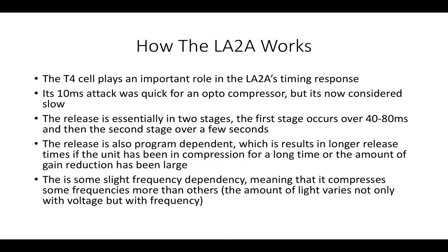Going back to that T4 cell, that's the important part, arguably one of the most important parts in the compressor. It plays an important role in its time response. 10 millisecond attack - some of the original manuals were incorrect. They had a 10 microsecond attack, which was actually incorrect. They've updated that in the newer manuals, but it is a 10 millisecond attack, which is fast, really. But now it's considered slow because compressors are much faster acting, such as the 1176 FET compressors. It was quick for opto-compressors - there were other opto-compressors before this that were just a little bit slower to respond.